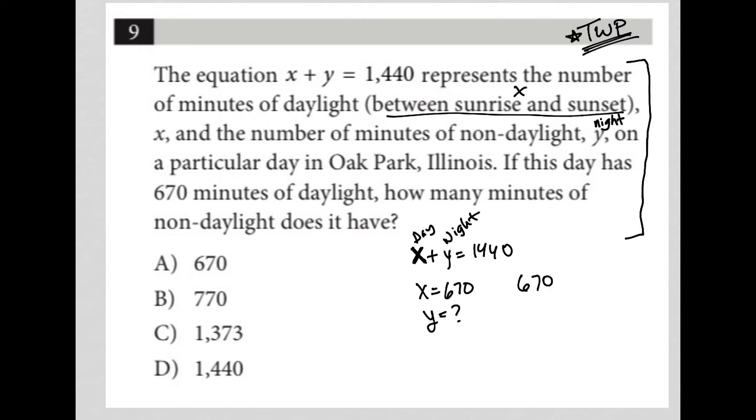So I'd have 670 plus y equals 1440. I subtract 670 from both sides here. y equals, this is 0 minus 0, 0, 4 minus 7, 3, 14, 7, carry, or borrow, I should say, 13 minus 6, 7. So 770 is what y is equal to.